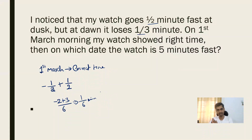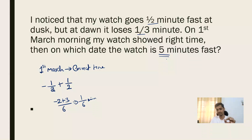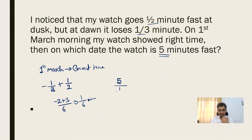Our question is: on which date will the watch be five minutes fast? If it gains one-sixth of a minute per day, then the number of days needed is five divided by one-sixth, which equals 30 days.